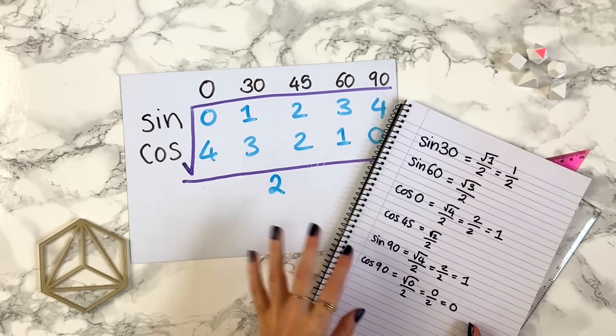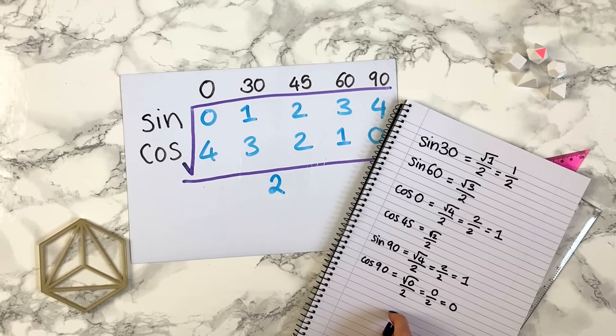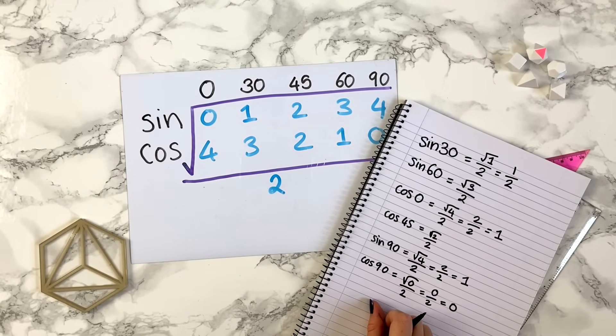So there you go. That's how you use this diagram to tell you all the key cos and sine values that you should need. Anytime in a question you need to write down sine 45 and you're not sure what that is, it's a really good idea to just doodle this diagram on the corner of your paper, and then you can find out the key values.